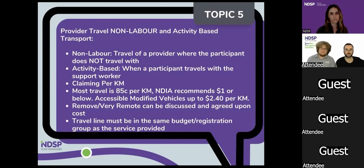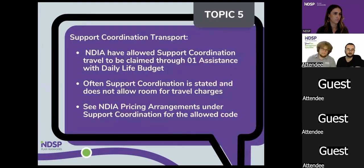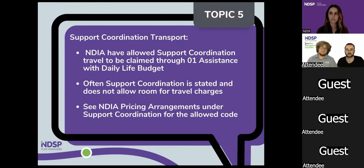The one exception to claiming transport from the same budget is support coordination. The NDIA has allowed support coordination travel to be claimed under assistance with daily life, because there is a code stated in the pricing arrangements for that. If you look at the pricing arrangements for support coordination, it gives you a specific line item you can use. This is the only budget where you can claim transport from a different budget, because support coordination is sometimes stated as its own specific support with a set quantity, giving no wiggle room to claim travel. So the NDIA has given a little option to still claim some transport for support coordination.